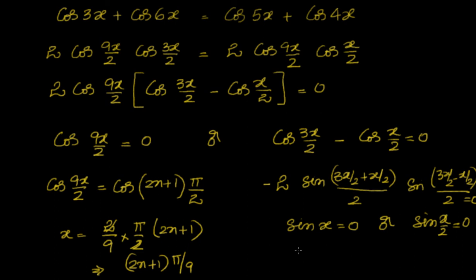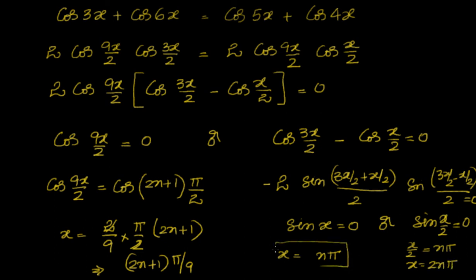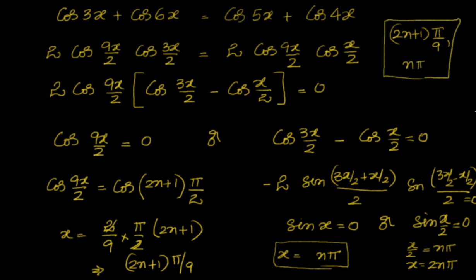For sin x equal to 0, the general solution is x equal to nπ. For sin(x/2) equal to 0, x equal to 2nπ. These two are both taken care of by x equal to nπ. So the complete solution for this problem is x equal to (2n+1)π/9 or x equal to nπ.